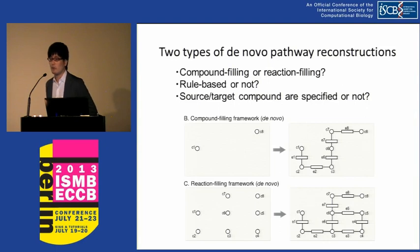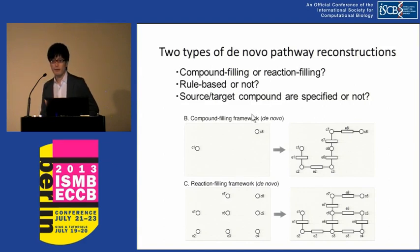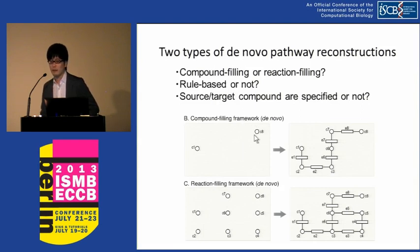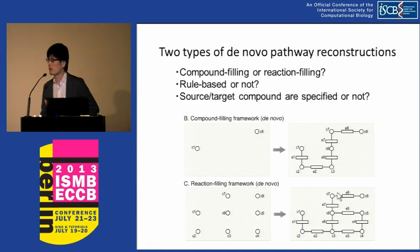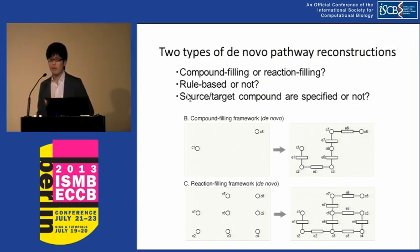In my view, de novo pathway reconstruction can be classified in many ways. One criterion is whether it is compound filling or reaction filling. In the compound filling framework, the target or source compound is given, and the method predicts the existence of intermediate compounds. In the reaction filling framework, many chemical structures are already given, and the presence or absence of possible reactions connecting the compounds is predicted. De novo methods can also be classified based on whether they use predefined chemical transformation rules, or whether source or target compounds are specified.